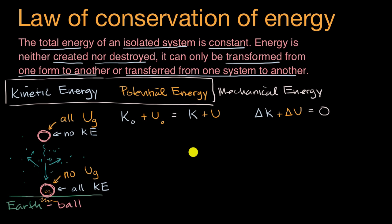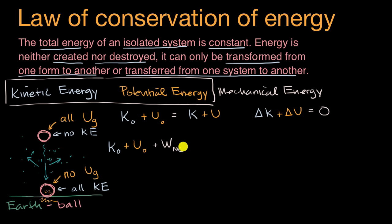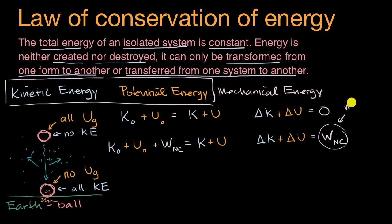But if you want to include dissipative forces, they do something called non-conservative work — actually negative work, because the force of friction always acts opposite to the direction of motion. So we rewrite: initial kinetic energy plus initial potential energy plus work done by non-conservative forces (which is negative for friction) equals final kinetic energy plus final potential energy. Or: change in kinetic energy plus change in potential energy equals work done by dissipative forces, which is negative for friction.